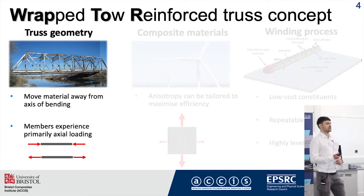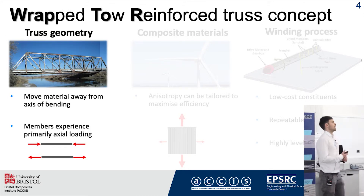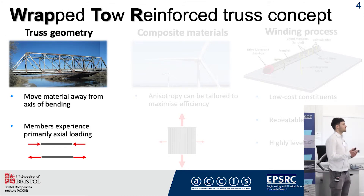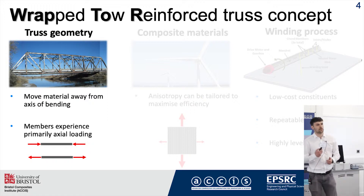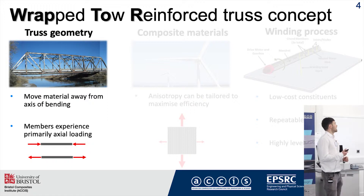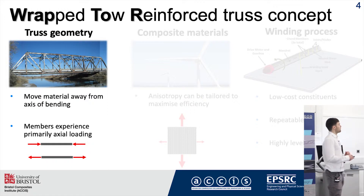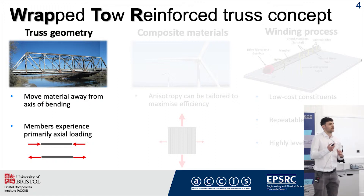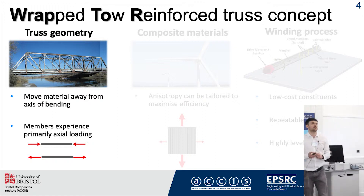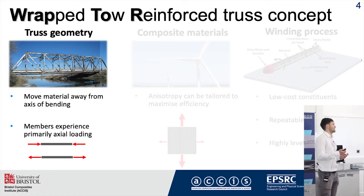First off we're using a truss geometry. Truss geometry is often used in structural applications where you want a really high structural efficiency. They achieve high structural efficiency by primarily moving material away from the axis of bending, but they also create a structure in which each of the members is primarily loaded axially.